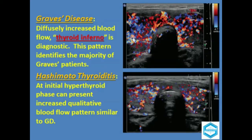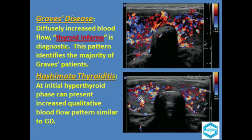This is the color flow Doppler image of Graves' disease. Here you can appreciate the increased vascularity almost throughout the gland. This is called pattern three vascularity, or thyroid inferno.